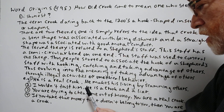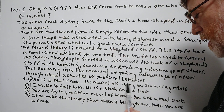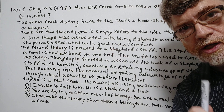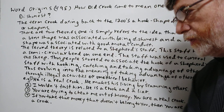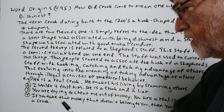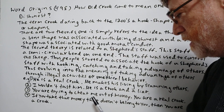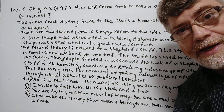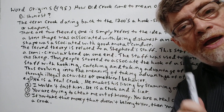Number three: 'You are trying to cheat me out of money. You are a real crook.' Number four: 'If you take that money that doesn't belong to you, then you are a crook.'